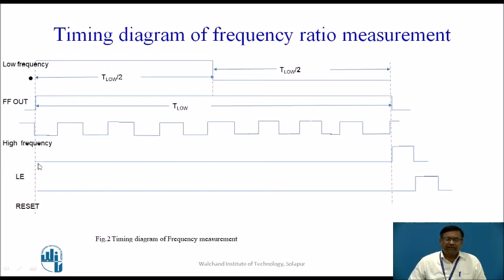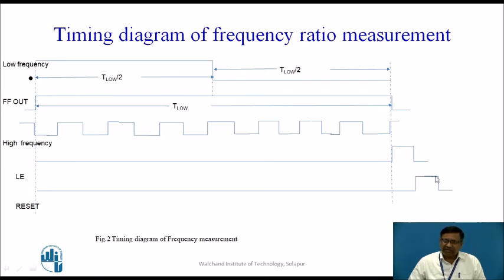At the end of the time period of the low frequency signal, the latch enable is activated. The data is latched into the internal counters and displayed on the seven-segment displays. After that, reset is activated just after the latch enable, making the counter ready for the next measurement cycle. This completes the frequency ratio measurement setup.